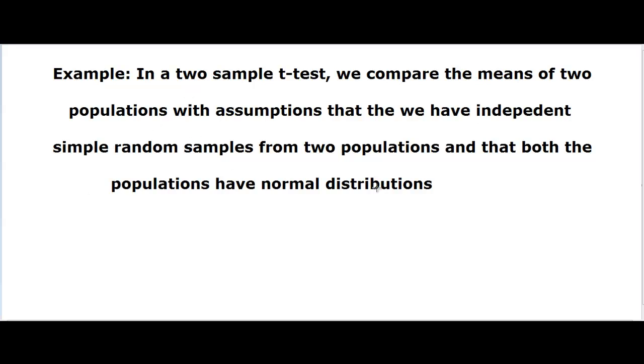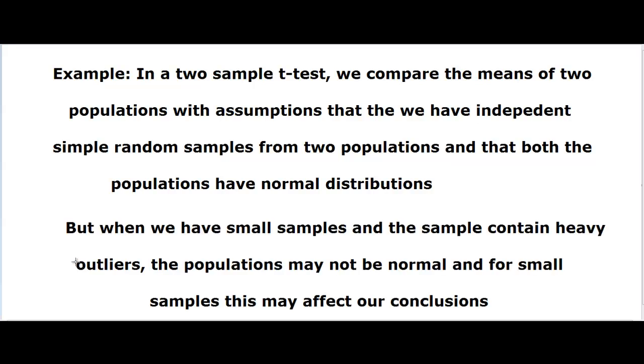In this example, we are going to consider two sample tests, or comparing two populations. So far, when we were comparing the population means and we did not know the population standard deviation, we were using two sample t-test, and the assumption was that we have independent random samples from the two populations, and both the populations have normal distributions. But when we have small samples and the samples have heavy outliers, and we have reasons to be suspicious that the population may not be normally distributed, our conclusions may be affected if we are still using the t-test.